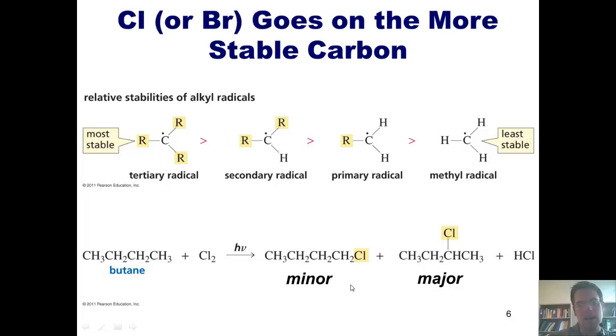Keeping in mind that to get to this chlorine that is attached to a primary carbon, it has to traverse a primary radical, whereas putting the chlorine on an internal carbon traverses a secondary radical. That explains why we see the secondary substituted product as being the major product, because it goes through the more stable intermediate, the secondary radical versus the primary radical.